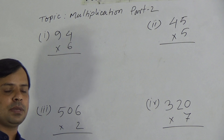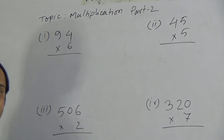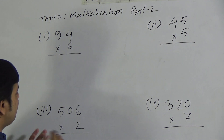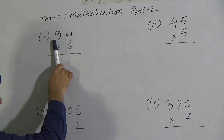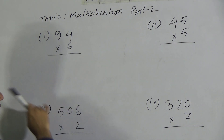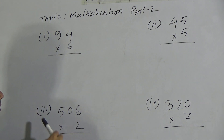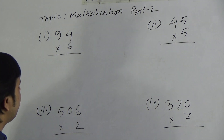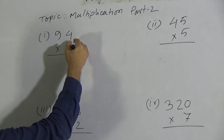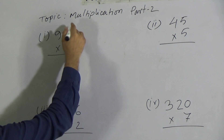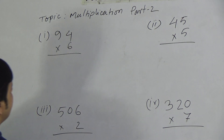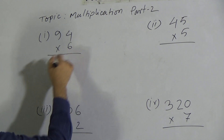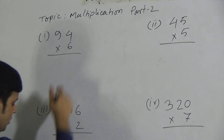By single digit number. You need to remember that in case of multiplication, we have to multiply all the digits of the first number by the second number separately. So first we have to multiply the 1's place digit by the multiplier.